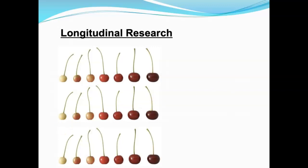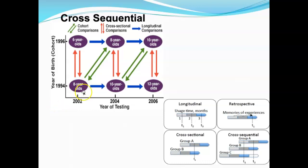A third approach is cross-sequential research, which tries to eliminate the drawbacks of both cross-sectional and longitudinal research while capturing the benefits of both. You use two groups and compare them over time.